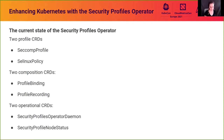The operator is driven by a few different custom resource definitions that we can break into three general categories. The first is the profile CRDs — the SecComp profile and SELinux policy CRDs — which define the actual security profiles that get installed on the underlying Linux host. Then we have composition CRDs — the profile binding and profile recording CRDs — which help application developers build and use security profiles. Finally, we have operational CRDs, which help cluster administrators with the running of the operator itself.